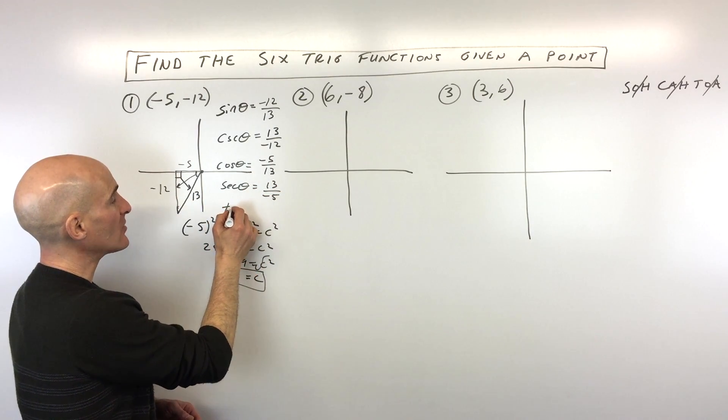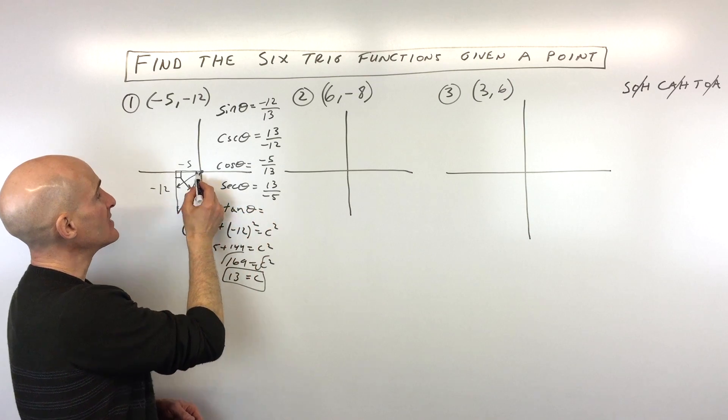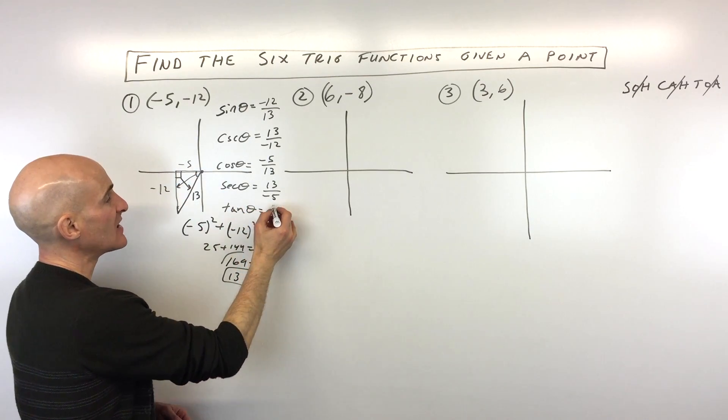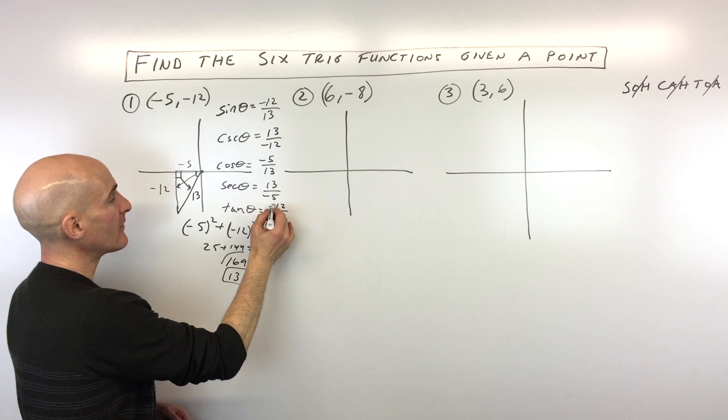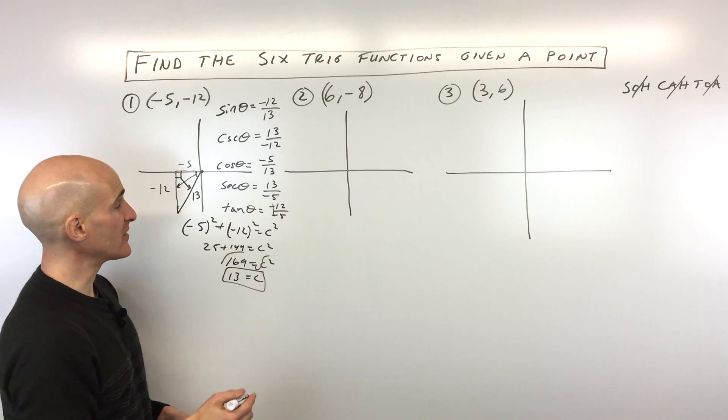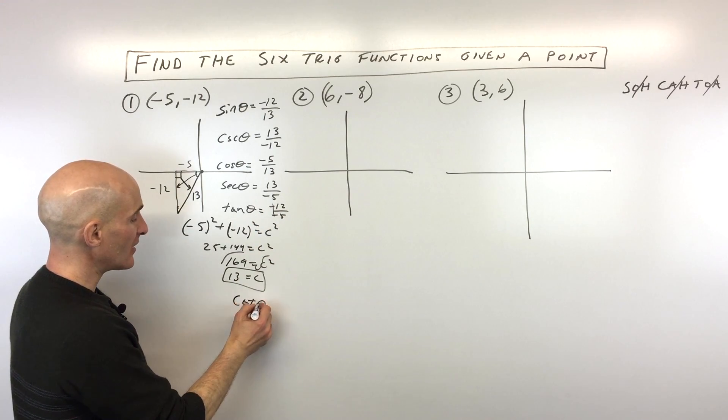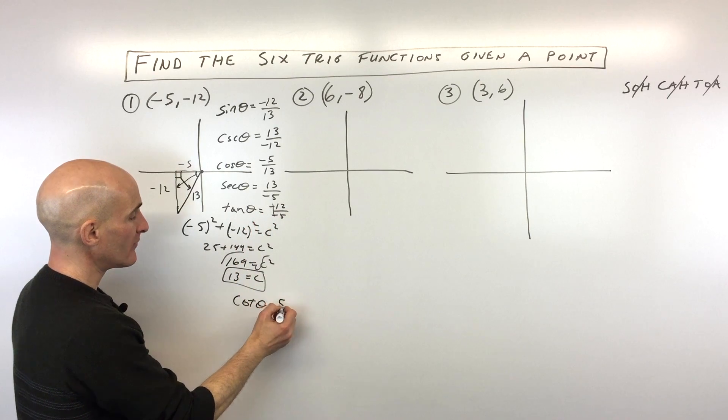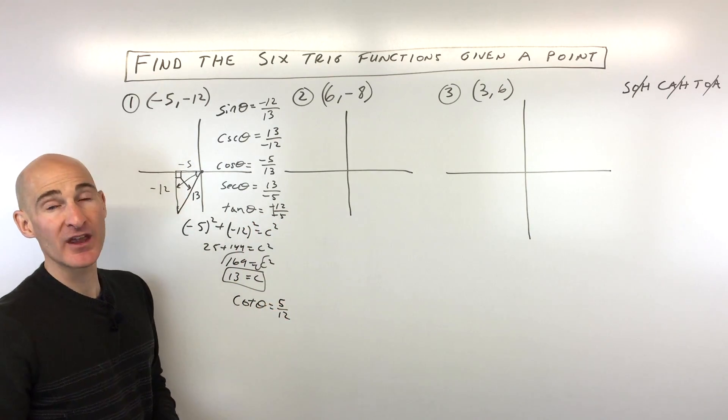Let's go to the tangent now. So the tangent of theta is opposite over adjacent. So that's negative 12 over negative 5. You can see the two negatives cancel, so that's 12 fifths. And then the cotangent of theta, we just take the reciprocal of the tangent, and that's 5 twelfths.